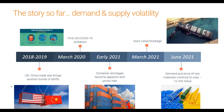On top of the container shortage came the blockage of the Suez Canal, one of the world's most trafficked shipping lanes. An estimated $400 million worth of goods flows through the canal every hour, and one of the world's largest cargo ships blocked it for six days. The impact on the supply chain was devastating — this blockage resulted in an estimated $54 billion in trade losses, and recovery will take months at the very least.